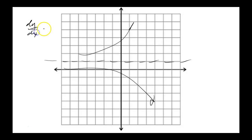For example, dy/dx equals 2(y minus 1): y equals 1 is the critical value. For y greater than 1 the slope is positive, so the function goes upward. For y less than 1 the slope is negative, so the function goes downward. That's your direction field — c equals 1 is a repeller, asymptotically unstable.